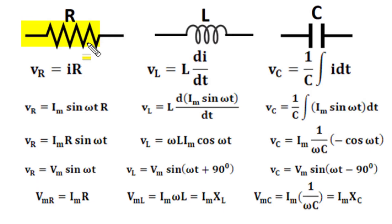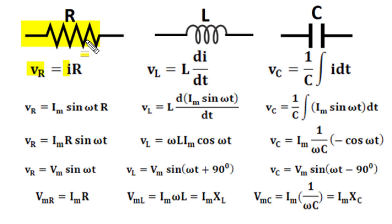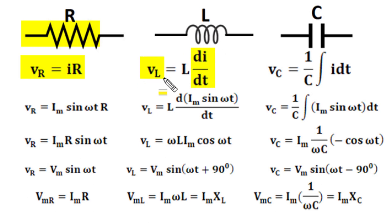Resistance is opposition to the flow of current. This property demands proportional voltage for flow of current through a resistor, and instantaneous voltage across resistance is connected with instantaneous current through resistance as V = IR. Whereas an inductor is a coil property where change of current with respect to time demands proportional voltage, and the relation is V_L = L di/dt.